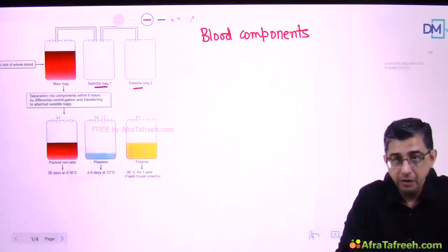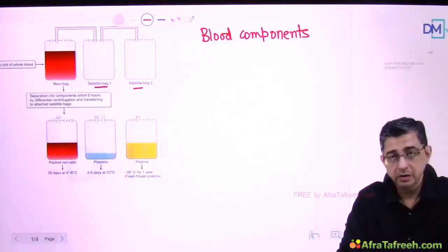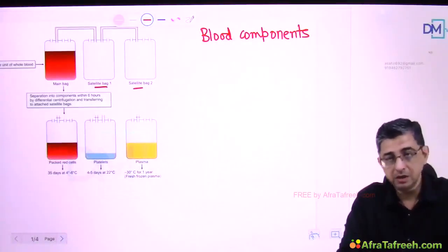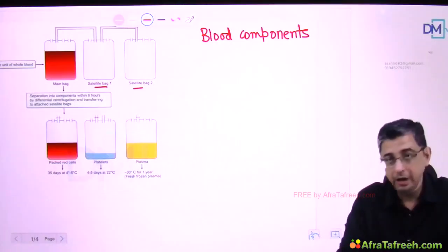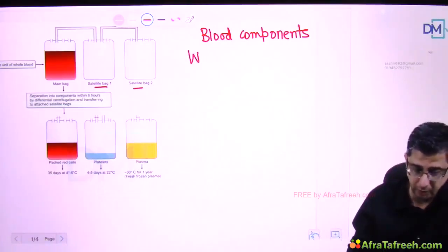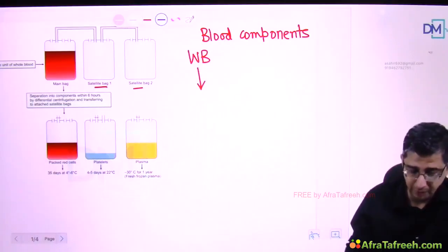Welcome back. We shall now be talking about blood components. Let us first see how they are generated. As you can see in the image, there are satellite bags attached to the main bag containing whole blood, from which we can generate blood components. WB stands for whole blood. In blood banks, they subject the whole blood to a high speed centrifugation.